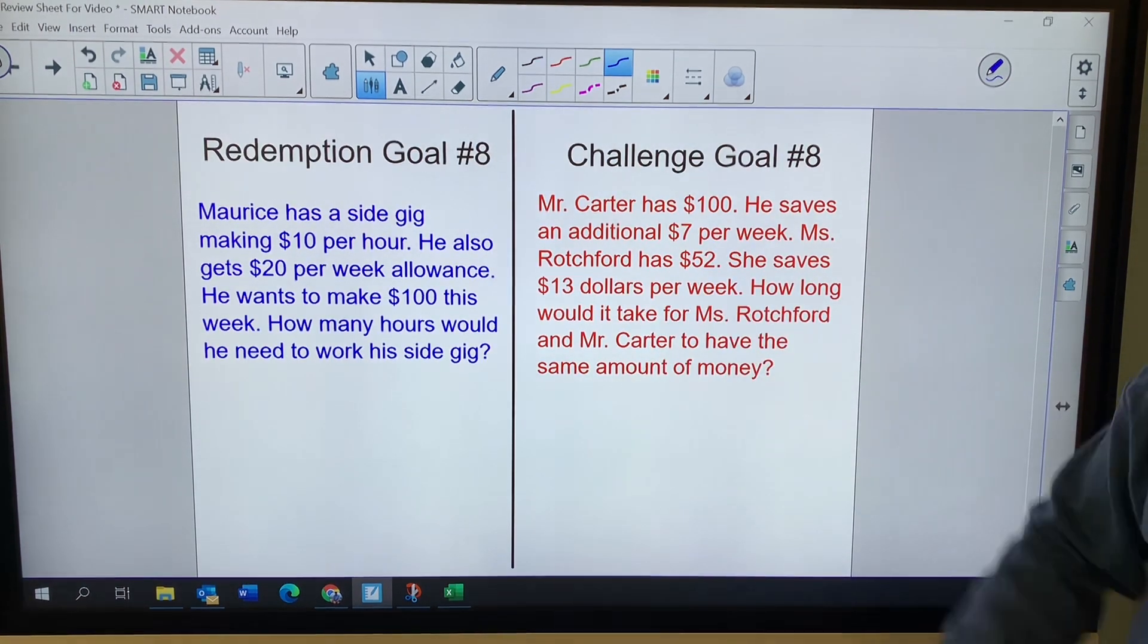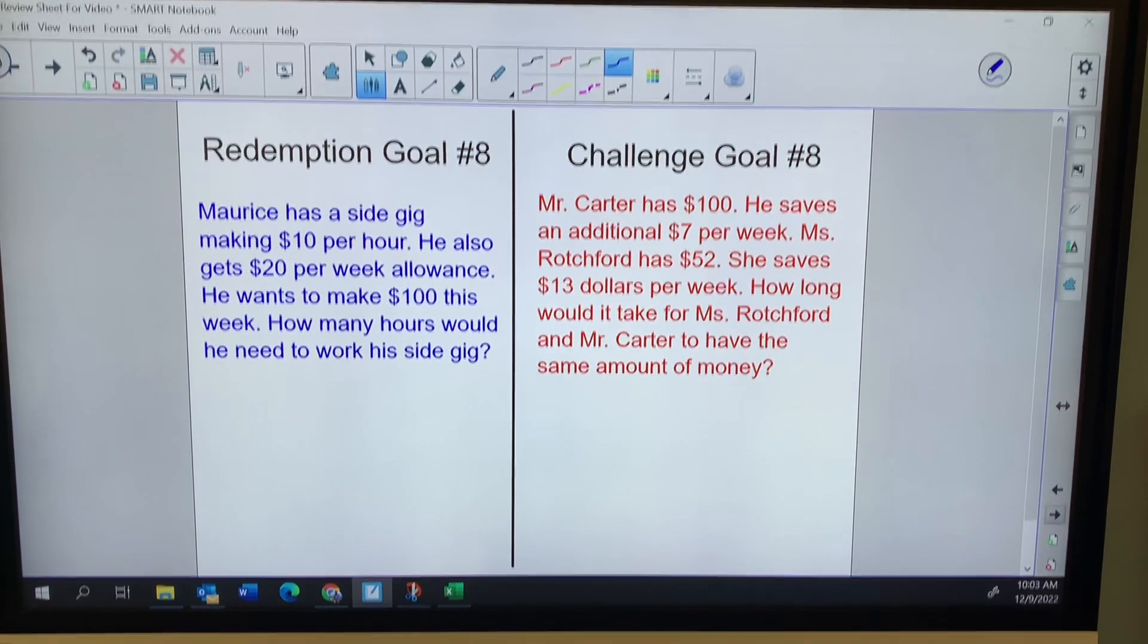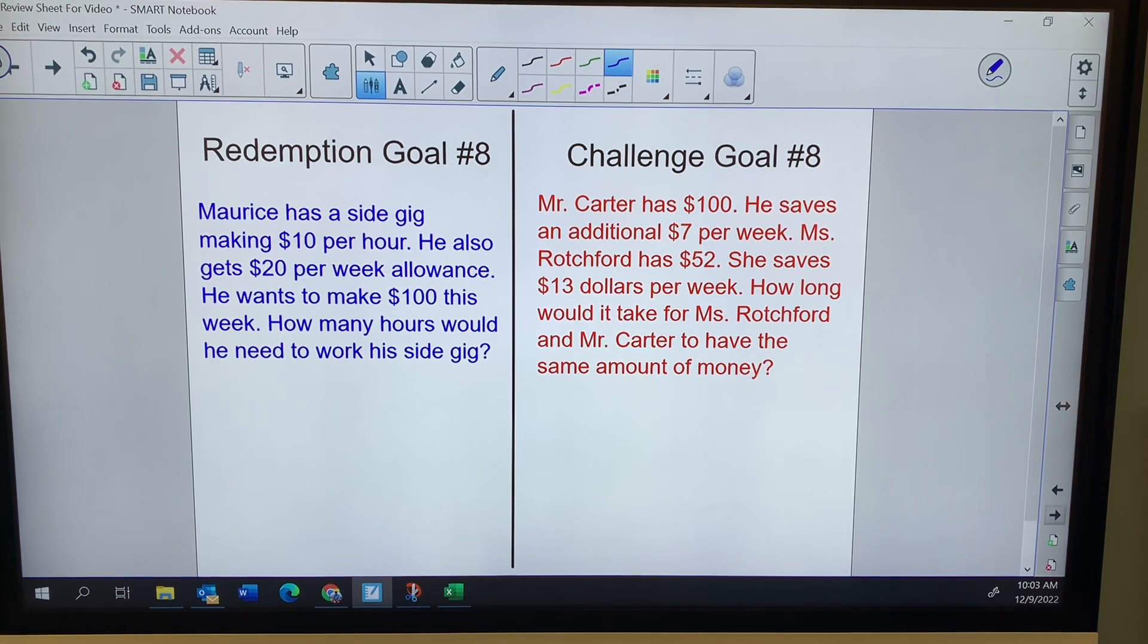Redemption is a word problem, making $10 per hour. Challenge is a word problem, where we're actually going to end up with that x on both sides.